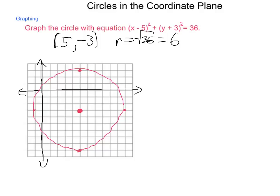But, main steps in doing this, locate your center, calculate your radius by taking the square root of what the equation is equal to, and then simply plotting your points and draw the circle.